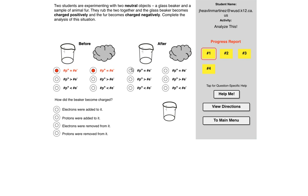The glass beaker becomes charged positively, so electrons are going to be taken away from it and more protons are going to be there than electrons. For the animal fur, it becomes negatively charged, so you have more electrons than protons, which means the electrons are going from the beaker to the fur. How did the beaker become charged? Electrons were removed.